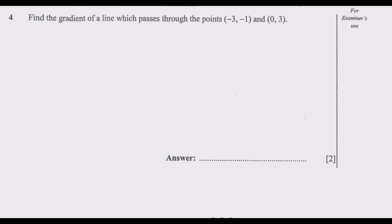Let us look at question 4. Find the gradient of a line which passes through the points (-3, -1) and (0, 3). There will always be a question that asks you to find the gradient or the equation of the line. The gradient is given by the slope of a curve.